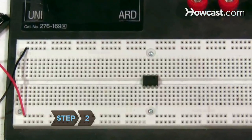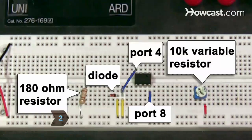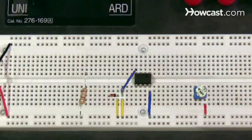Step 2: Connect the 180-ohm resistor, a diode, ports 4 and 8 on the timer, and the 10K variable resistor to the row of holes connected to the positive terminal by placing each of the components' leads and wires into the appropriate holes.